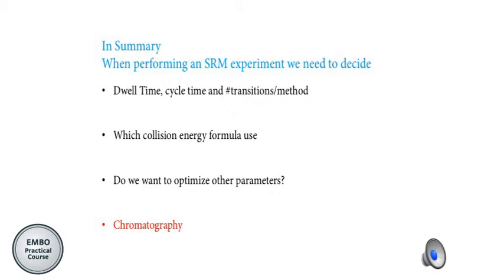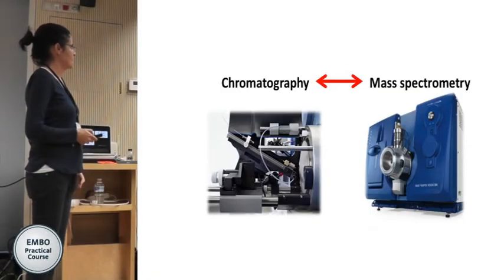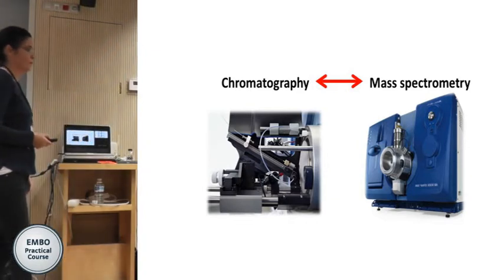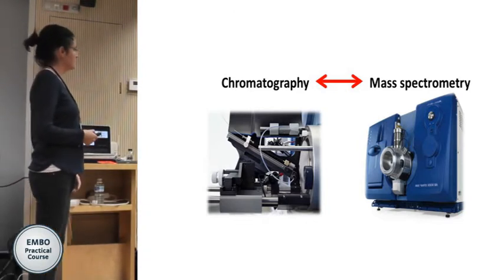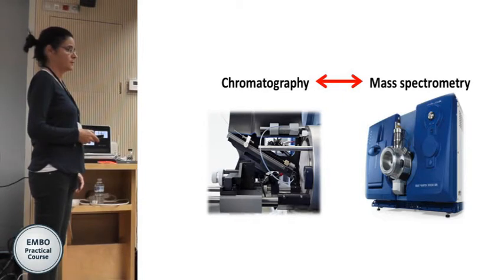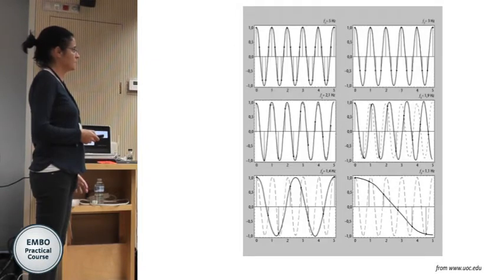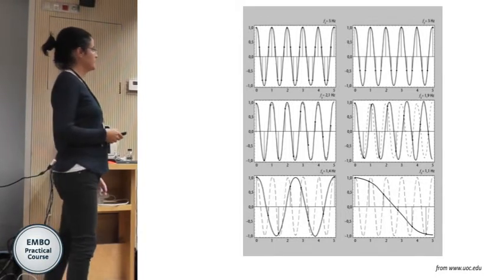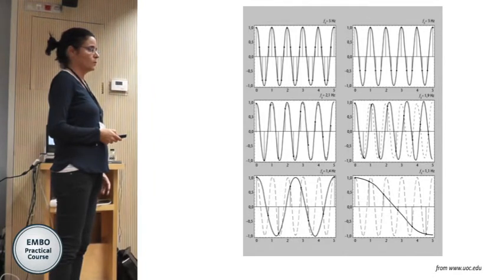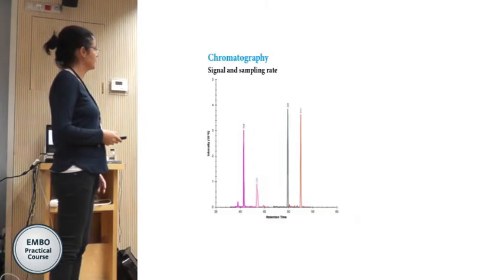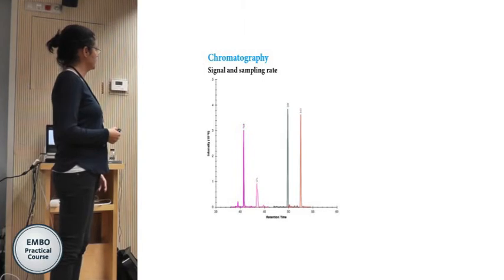Very important also is the chromatography side. When we do an experiment we have two instruments — the mass spectrometer and the LC in front of it — and this part is very important for getting a good result. We have a signal that we need to reconstruct, so we need to check the peak width in order to know what cycle time is optimal for our experiment.